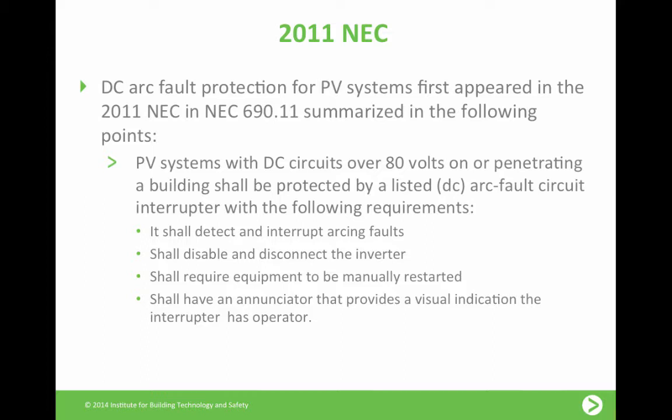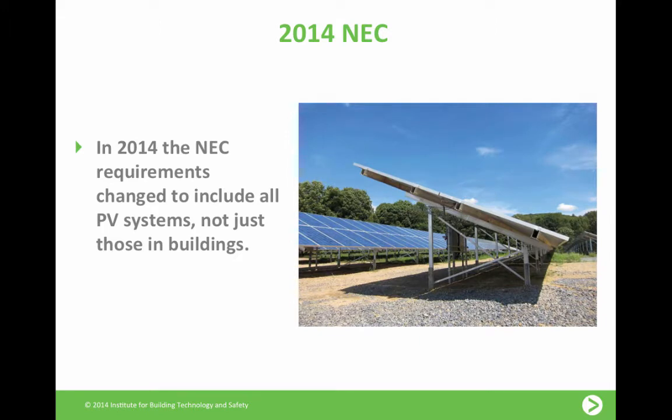Interrupting the arc fault usually occurs by removing the load — the load being the inverter. It disables and disconnects the inverter so there's no longer current flowing through the system, and it requires that the equipment be manually restarted. Once a system gets turned off for arc fault detection, you have to go out to the site, go to the inverter, identify the source, and then manually turn the system back on. There is also an annunciator that provides visual indication that an interrupter has operated — like a flashing light, and sometimes an alarm as well. The 2014 NEC kept the same rules except instead of saying on a building, it now applies to any PV system over 80 volts DC.